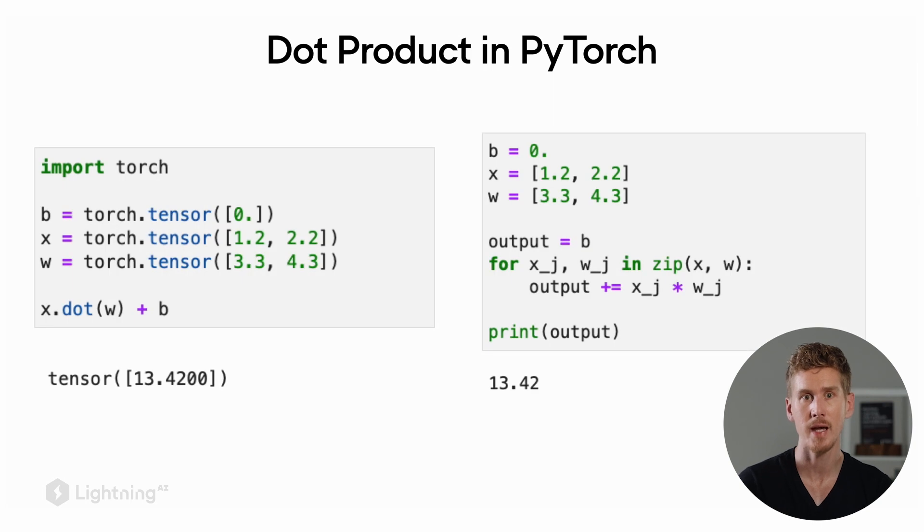Just for reference side by side, on the left hand side we have the PyTorch approach using the dot product and on the right hand side we have the plain Python approach just using a for loop. And as expected, the results are the same.